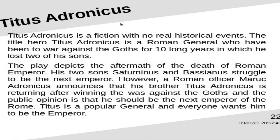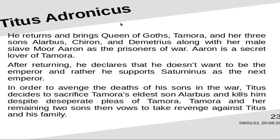Titus Andronicus is a fiction with no real historical events. Titus is a Roman general who has been to war against the Goths for ten long years, in which he lost two of his sons. The play depicts the aftermath of the death of a Roman Emperor. His two sons Saturninus and Bassianus struggle to be the next emperor. However, a Roman officer Marcus Andronicus announces that his brother Titus is returning after winning the war against the Goths. He returns and brings the Queen of Goths, Tamora, and her three sons Alarbus, Chiron and Demetrius, along with Aaron, as prisoners of war.